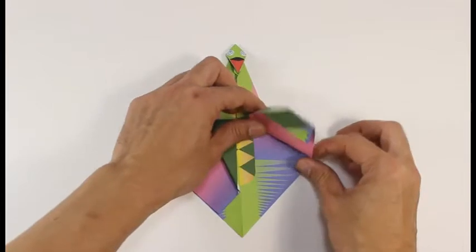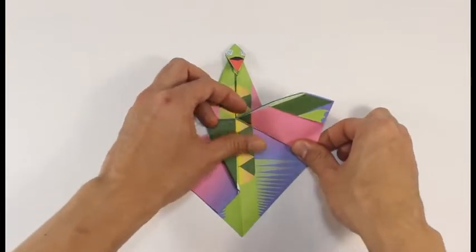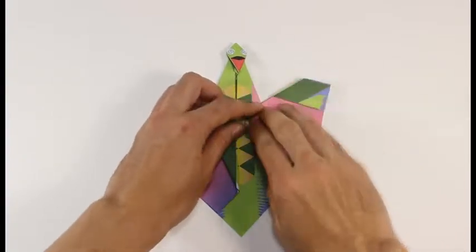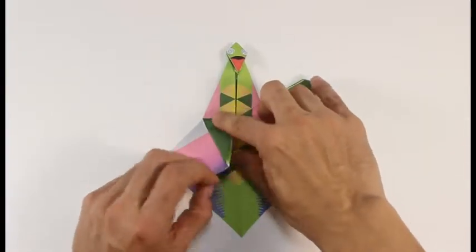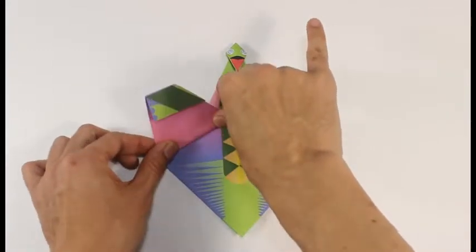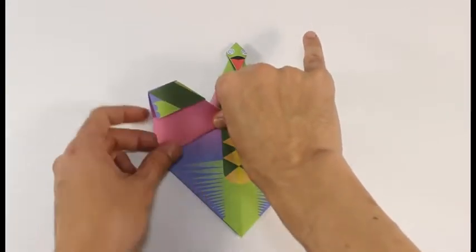Fold the wings up from the back corner to the inside corner. Fold up the other wing.